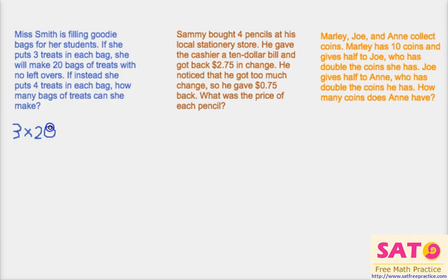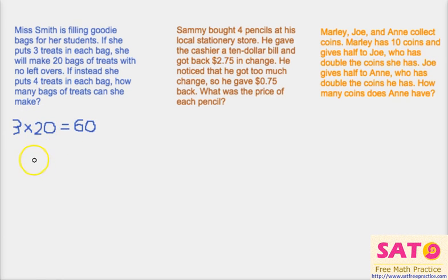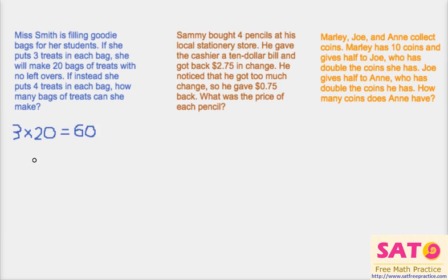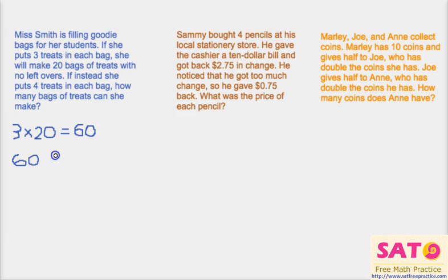Three treats in each of the 20 bags gives us 60 treats in total. Now that we know we have 60 treats, if she puts 4 treats in each bag instead of 3, we have to figure out how many bags there are. So we do 60 divided by 4, which equals 15.